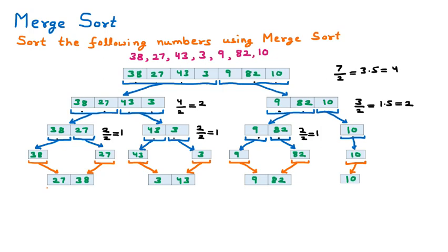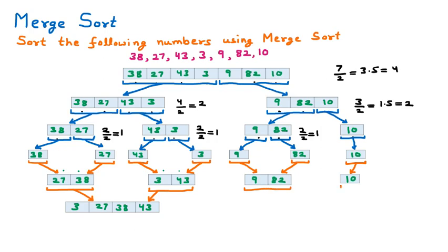Now we perform the next level of merging. List 1 is [27, 38] and List 2 is [3, 43]; they are merged into ascending order: 3, 27, 38, 43. On the right side, [9, 82] is List 1 and [10] is List 2. The merge sort algorithm compares these two lists and takes the smallest element each time in ascending order, giving: 9, 10, 82.